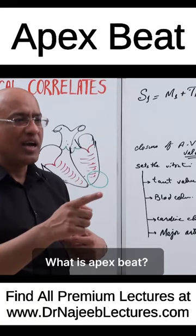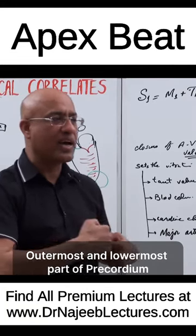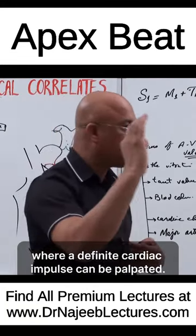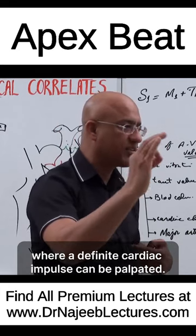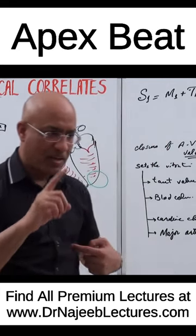What is apex beat? The apex beat is the outermost and lowermost part of the precordium where a definite cardiac impulse can be palpated.